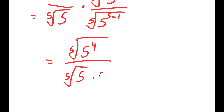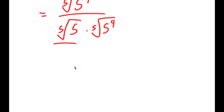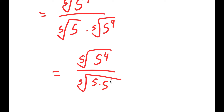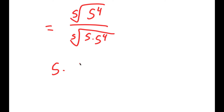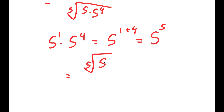Over the fifth root of 5 times the fifth root of 5 to the power of 4. The fifth root of 5 times the fifth root of 5 to the power of 4 is the same thing as the fifth root of 5 times 5 to the power of 4. And 5 times 5 to the power of 4 equals 5 to the power of 1 times 5 to the power of 4, which equals 5 to the power of 1 plus 4, which is 5 to the power of 5. So I get the fifth root of 5 to the power of 4 over the fifth root of 5 to the power of 5.